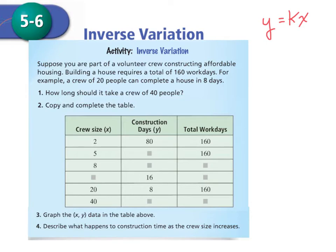Let's figure out the table first. If you're looking at the table, the first column is your x, the second column is your y. And this is the total number of workdays. So if you have a crew size of 2 and your construction days is 80, that means you're going to have a total of 160 workdays. Notice this is 160, this is 160, this is 160. All of these are going to be 160.